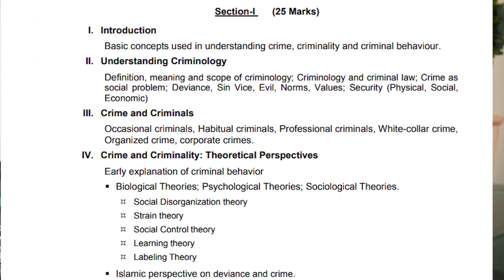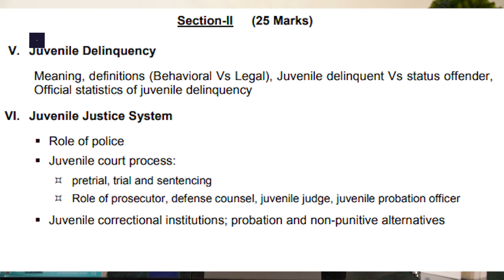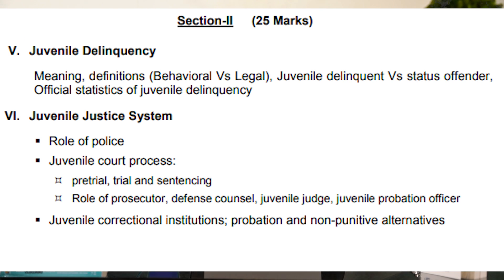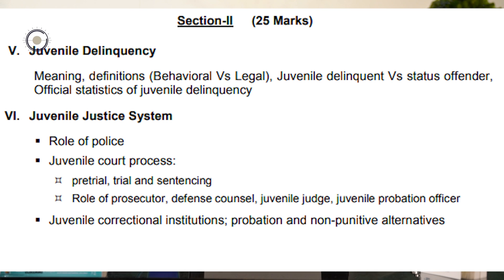In Section 2, we cover juvenile delinquency — cases where children are involved in criminal activities. We study their history, definitions, and why children go into juvenile delinquency. There can be mental reasons or social learning factors. According to the CRC — International Convention on the Rights of Children — anyone below 18 years of age is considered a juvenile. We have a juvenile justice system with separate courts in developed cities like Islamabad and Lahore.